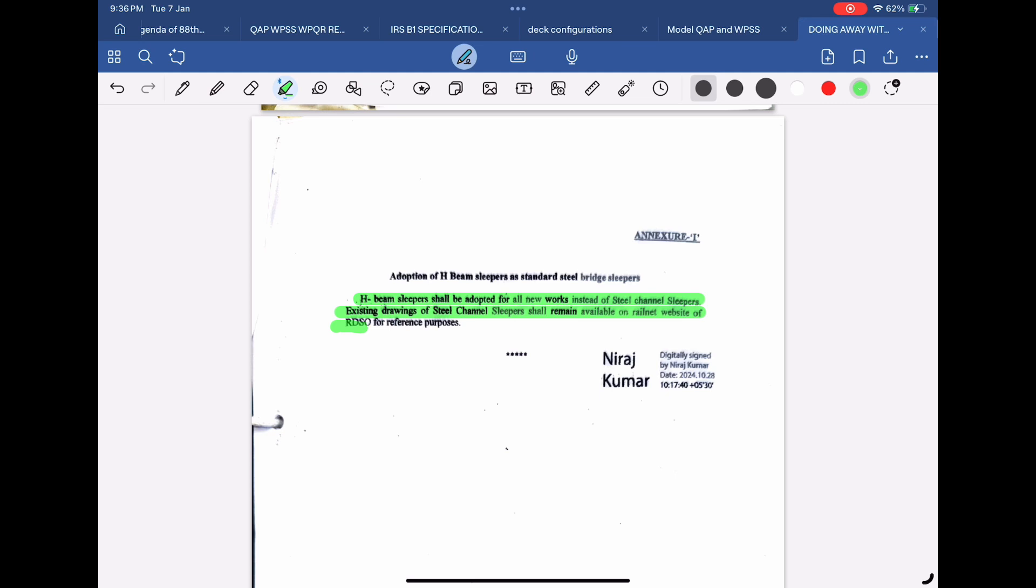Existing drawings of steel channel sleeper shall remain available on Railnet website of RDSO for reference purposes. This decision was taken in 87th BSC meeting, the Bridge and Structures Standards Committee meeting, held in 2023.